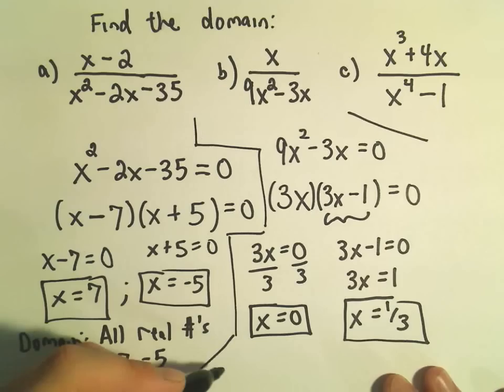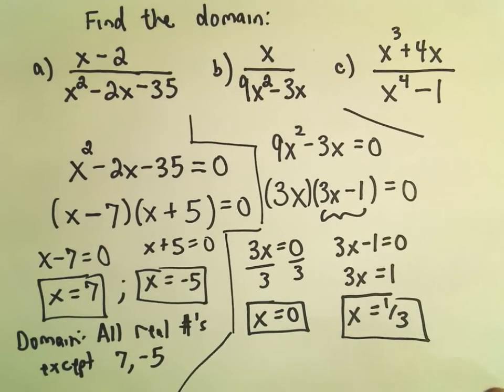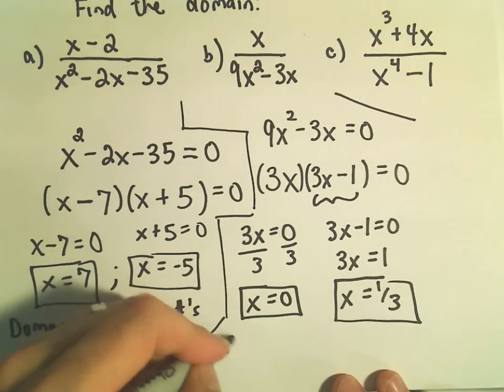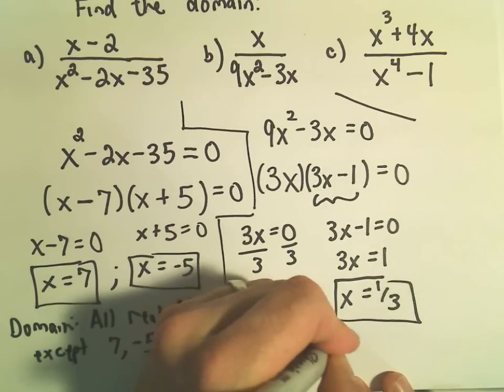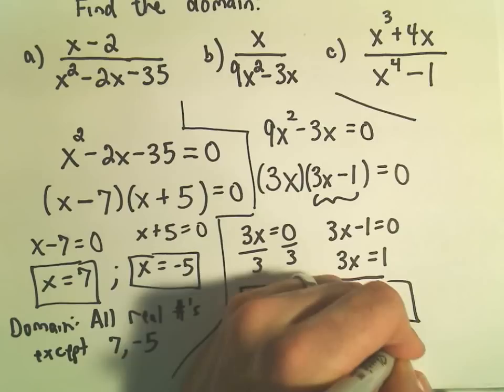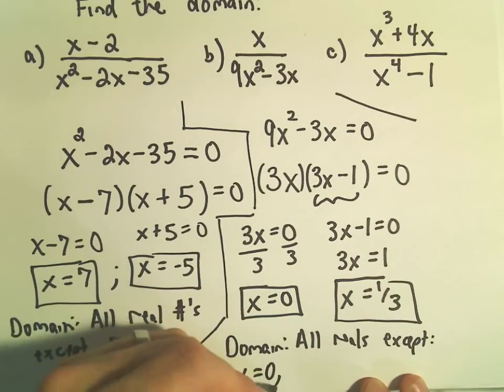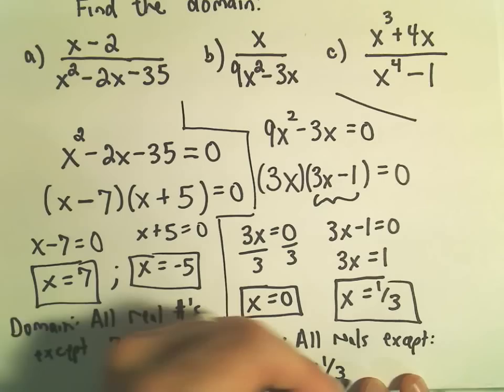So again, what I'm finding is I'm finding the values of x that have to be excluded. So again, the domain would be all reals except x equals zero and x equals one-third.